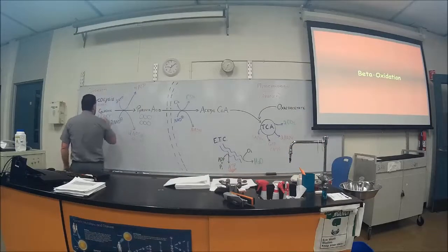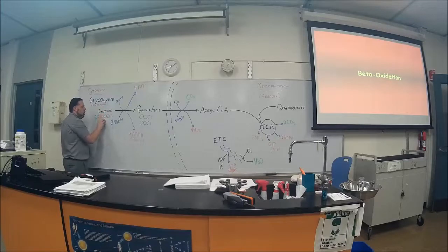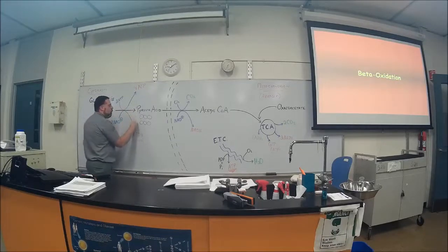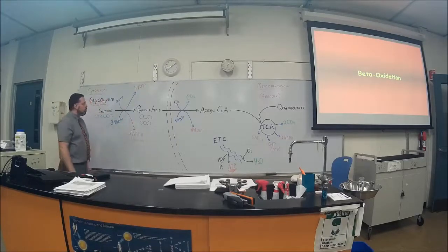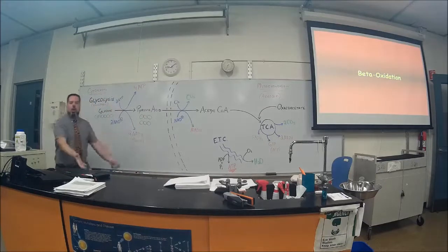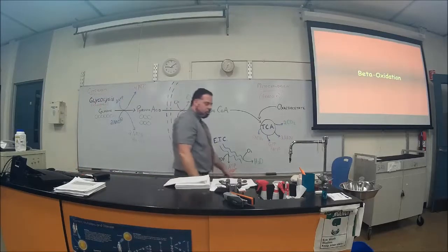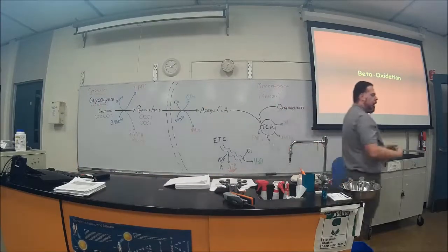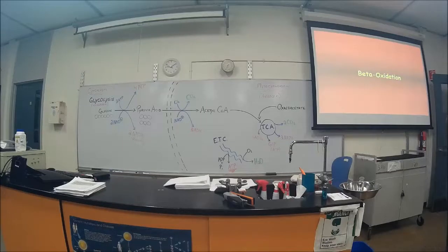Now, in this process of going from glucose, a six-carbon chain to two three-carbon chains, two ATPs go into it, but four come out. You have to invest two ATPs to do this.